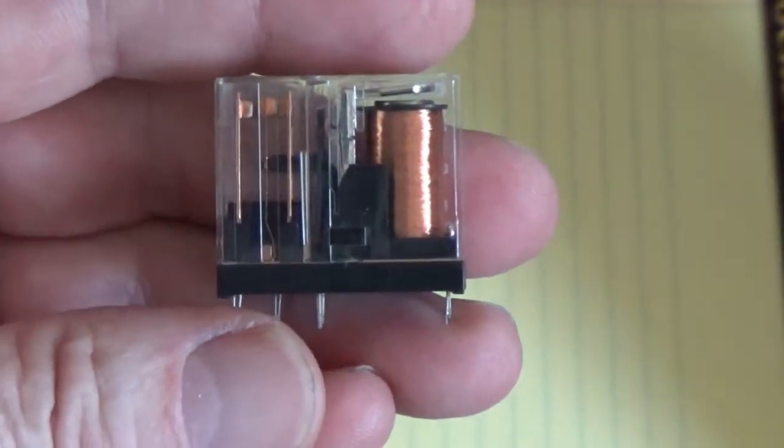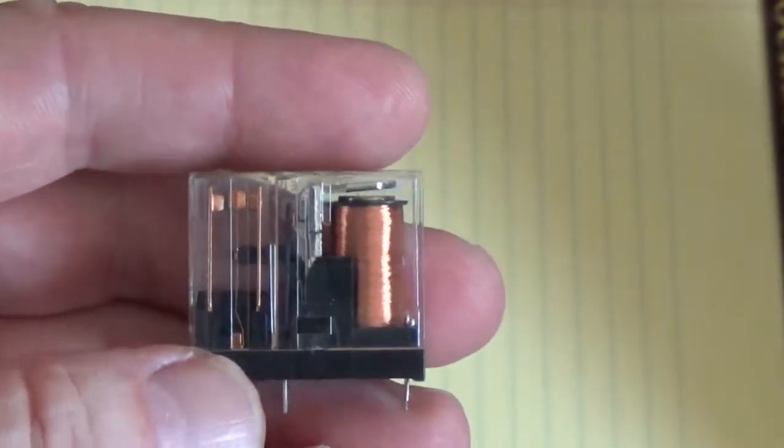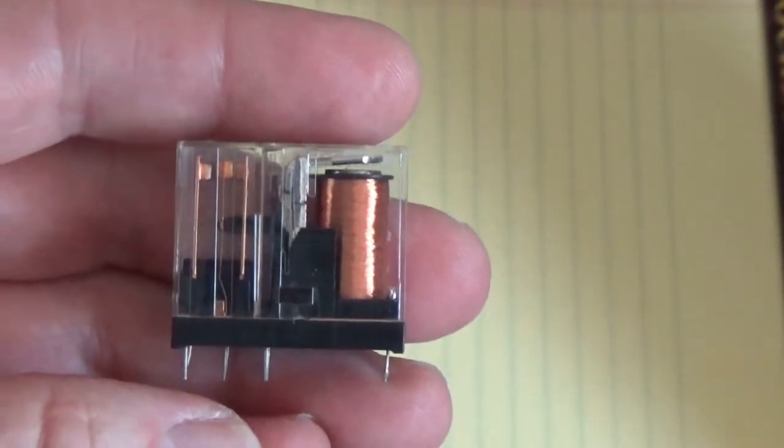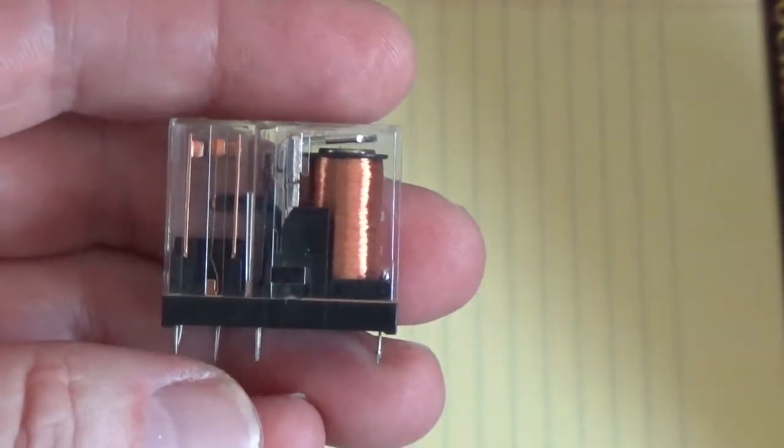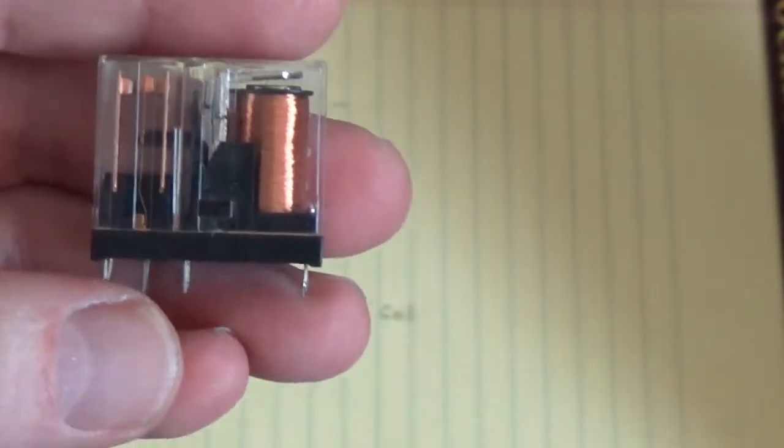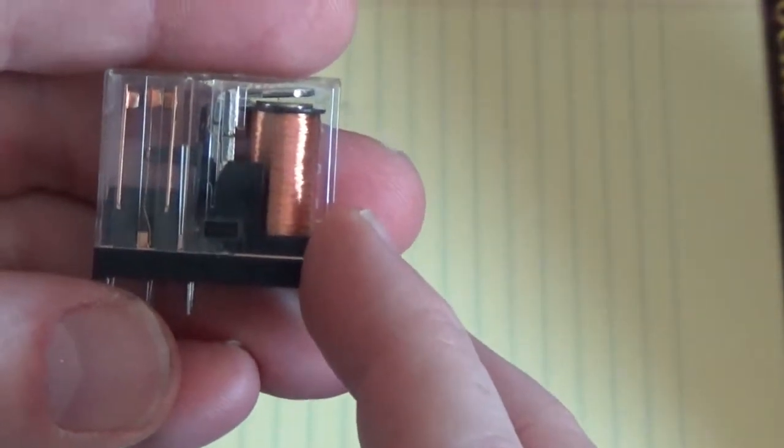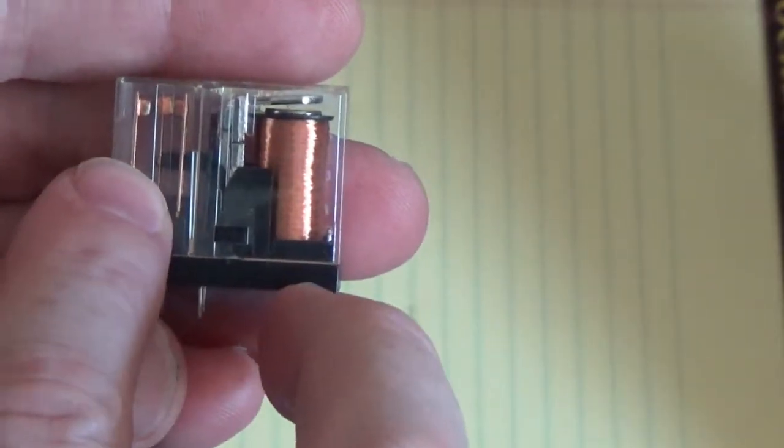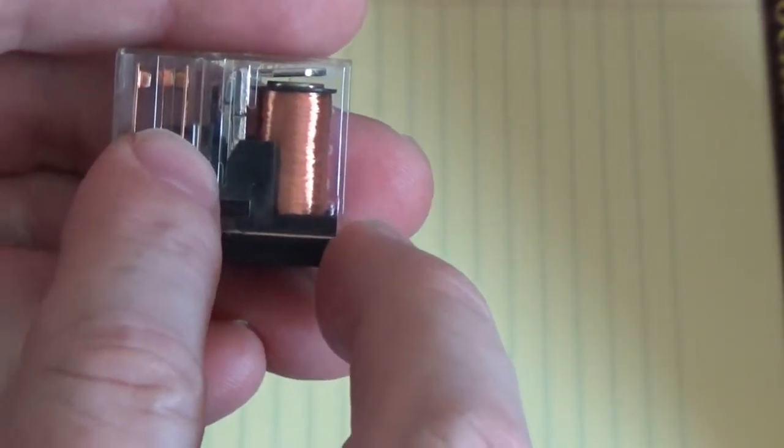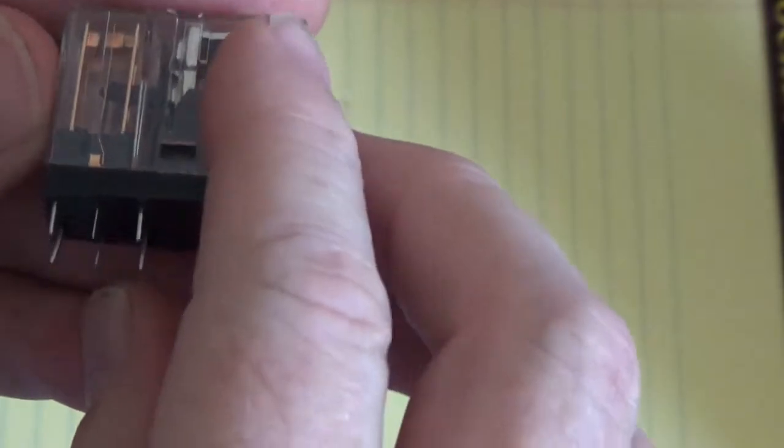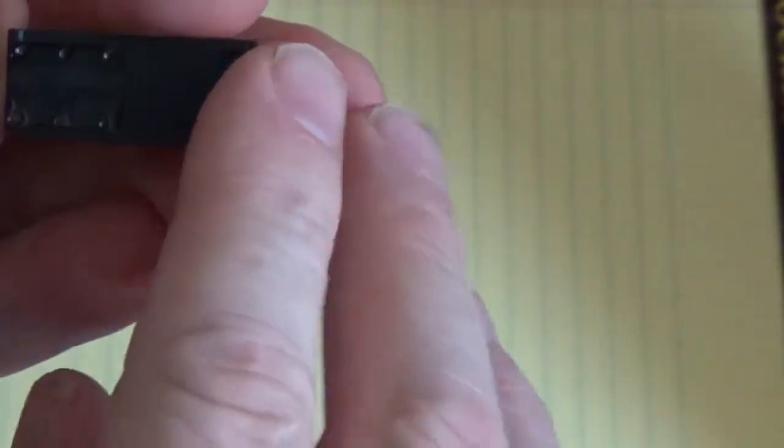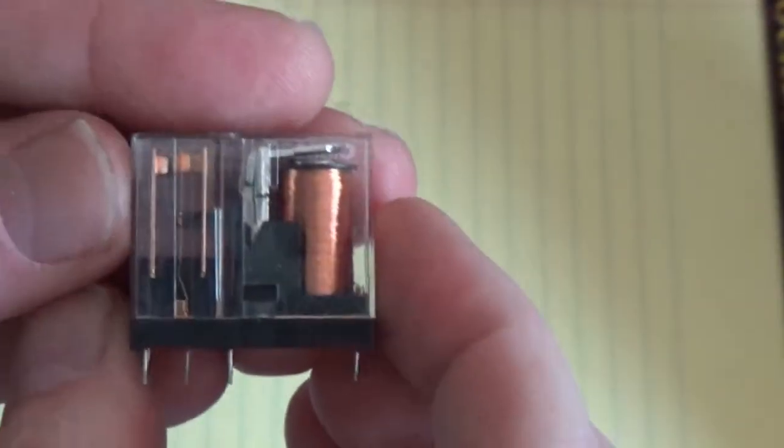Hello everyone, today we're going to test the electromechanical relay. Inside this relay is a coil of wire, there's contacts and the pins here to mate it to your circuit board.